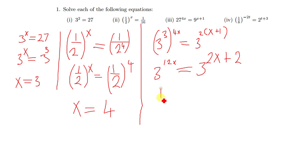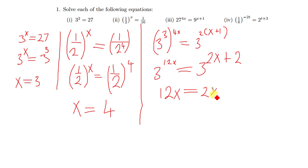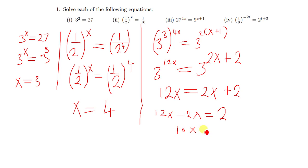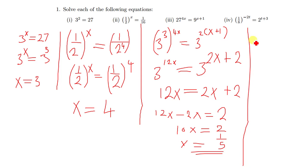Now we simplify: we have 3 raised to power 12x being equal to 3 raised to power 2x plus 2. Since the bases are equal, the exponents are also equal. So we have 12x minus 2x equal to 2, which gives 10x equal to 2. The value of x is therefore 1 over 5.